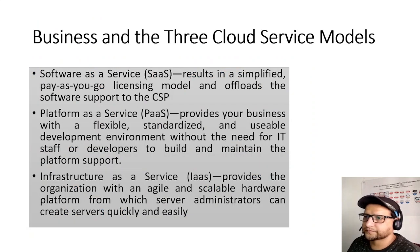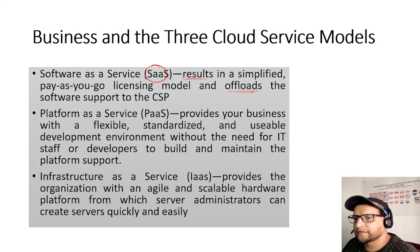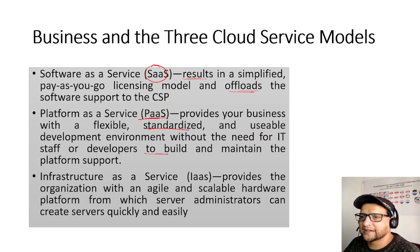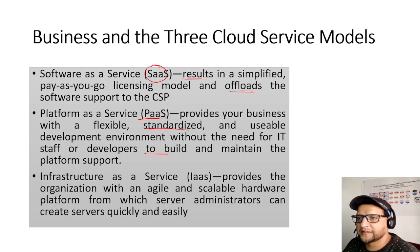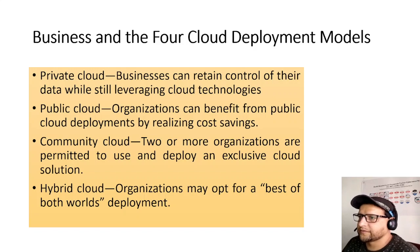Benefits of the three service models for business: Software as a Service results in a simplified pay-as-you-go licensing model and offloads software support to the CSP. Platform as a Service provides businesses with a flexible, standardized development environment without needing IT staff to build and maintain platform support. Infrastructure as a Service provides the organization with an agile, scalable hardware platform where server admins can create servers quickly.